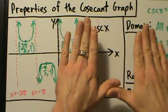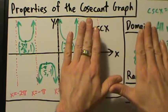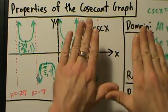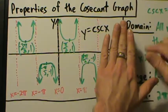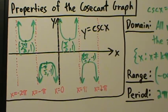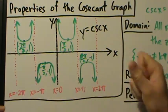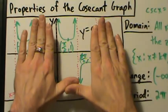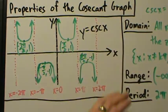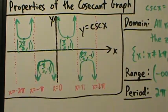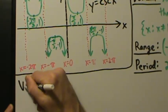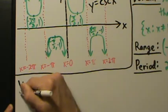Moving 2π units to the right we get the same shape: piece up here, asymptote, piece down here, asymptote. We can keep moving 2π units to the right and the same pattern continues. So infinitely far to the right and infinitely far to the left this shape keeps repeating — piece up here, asymptote, piece down here, asymptote — and so on. That's the period.